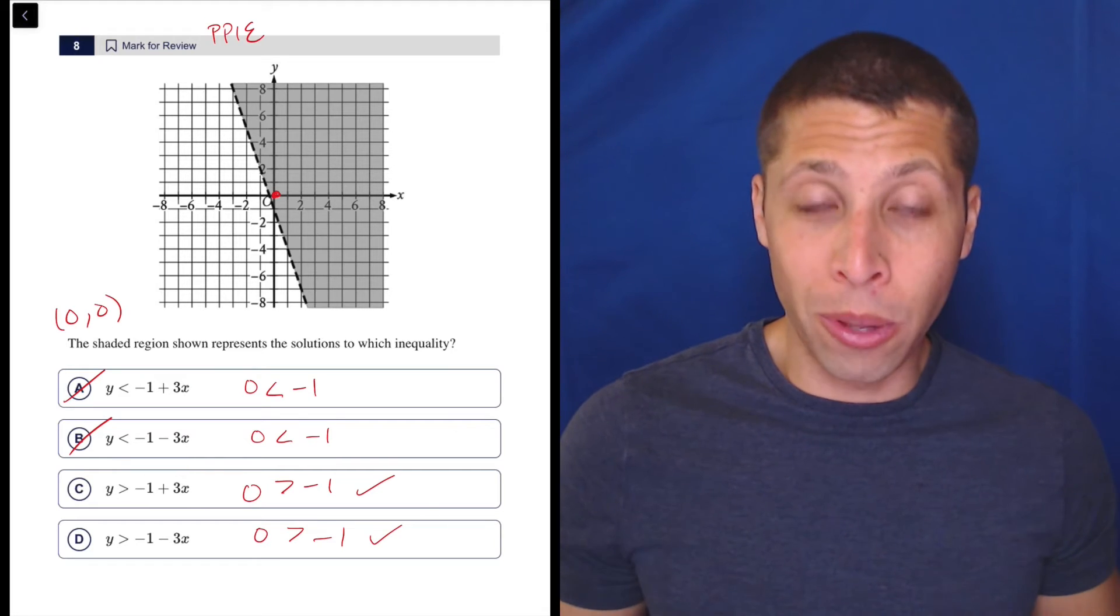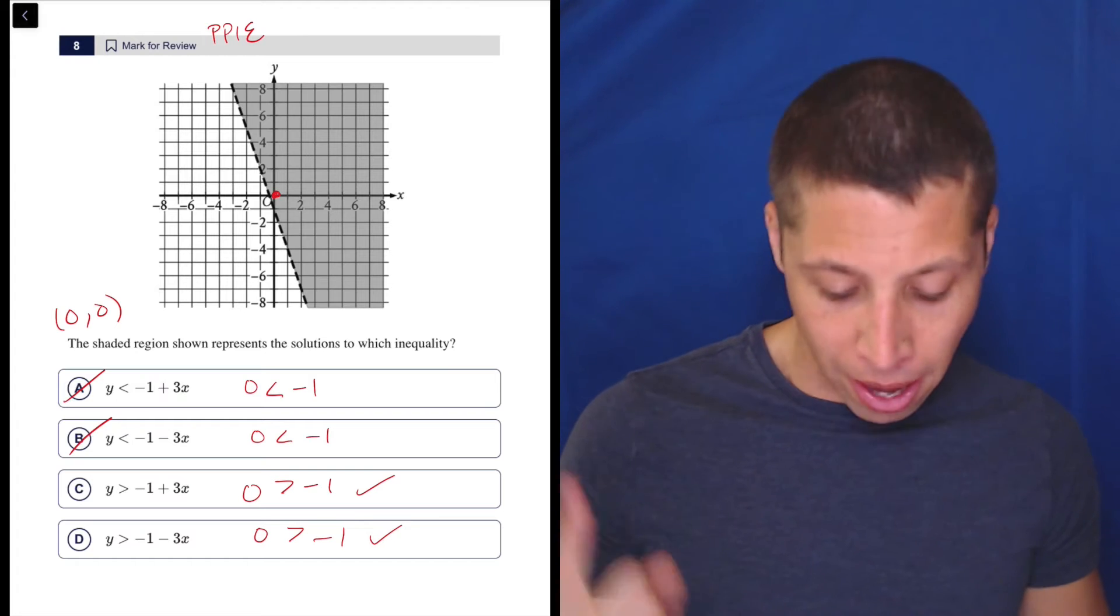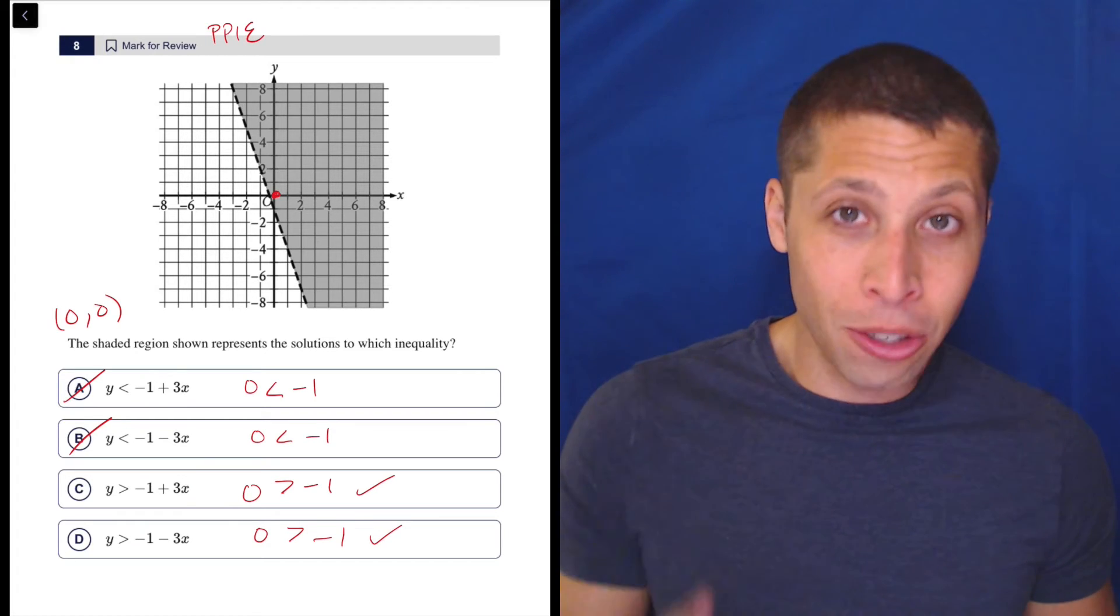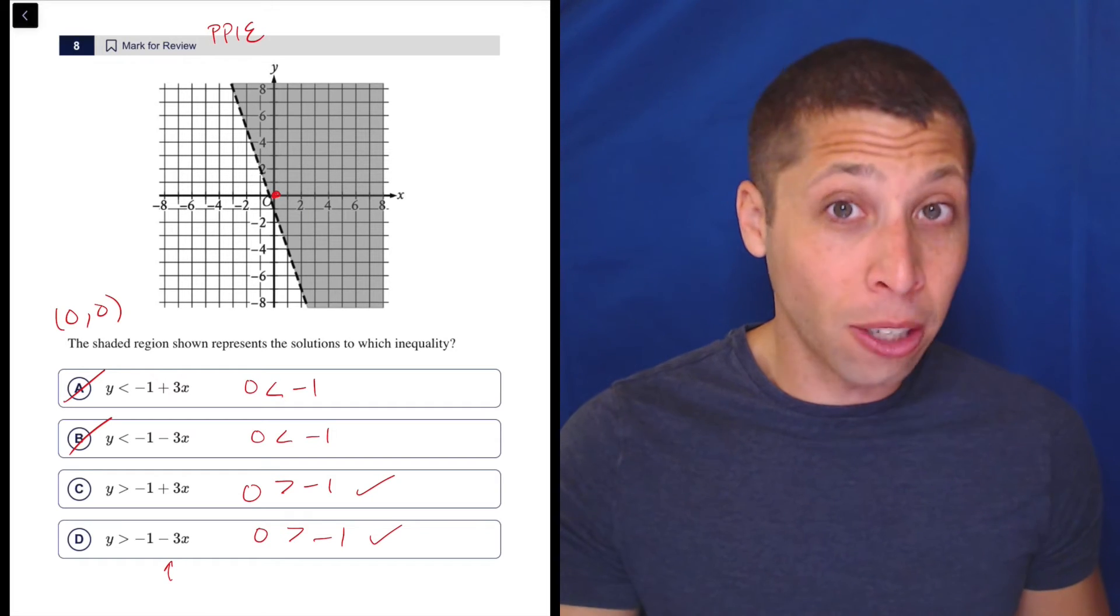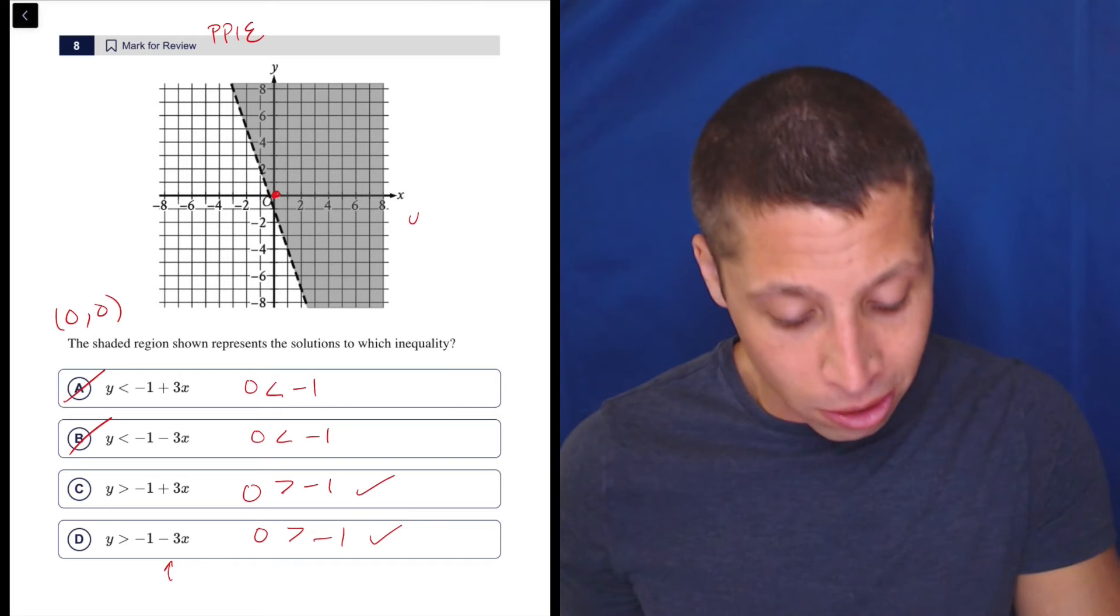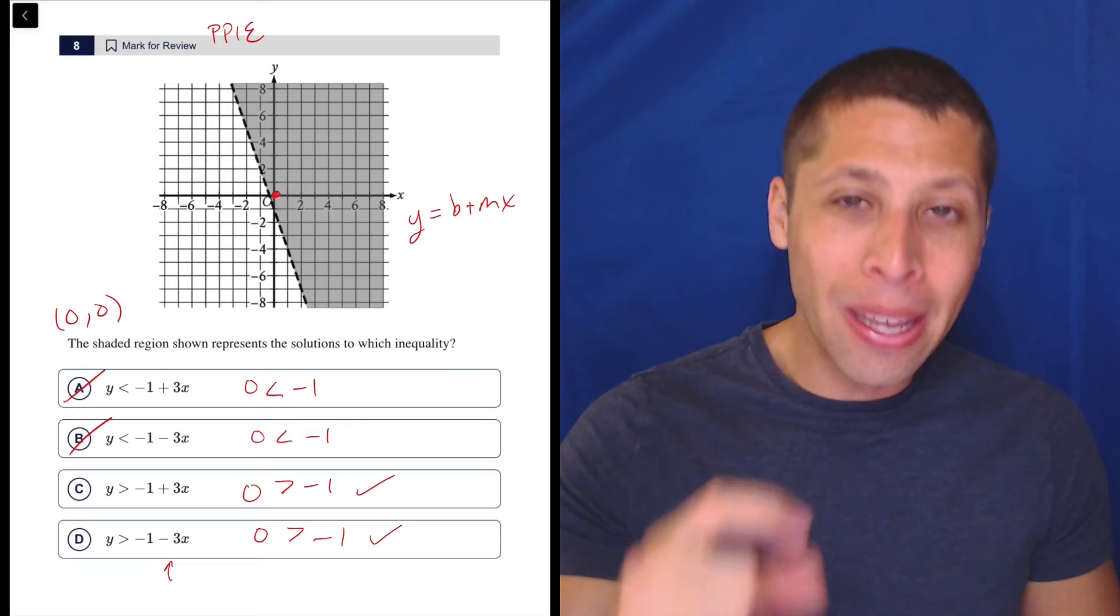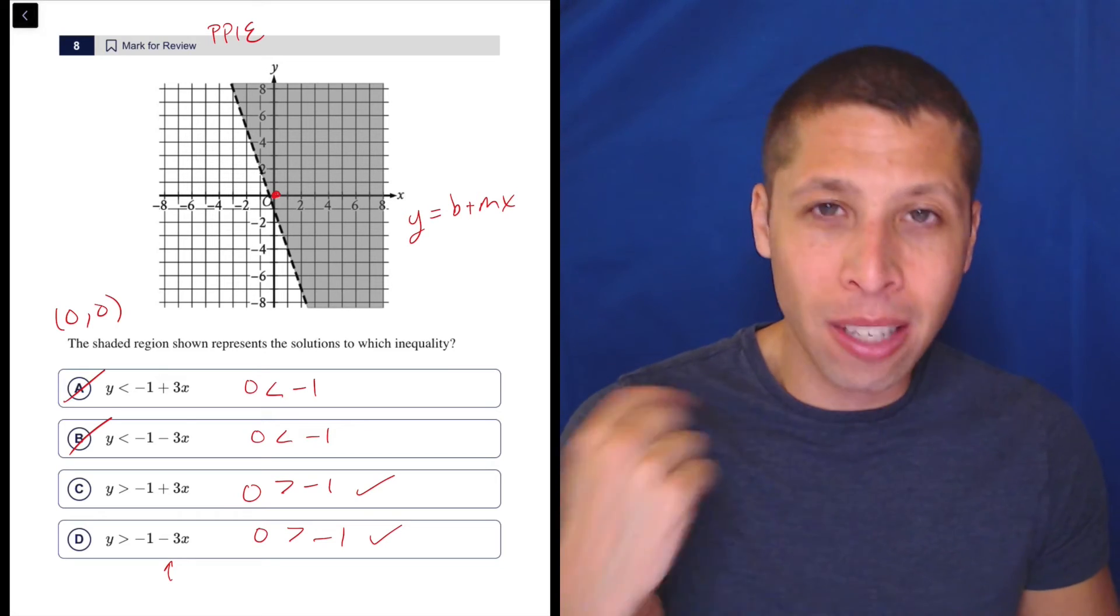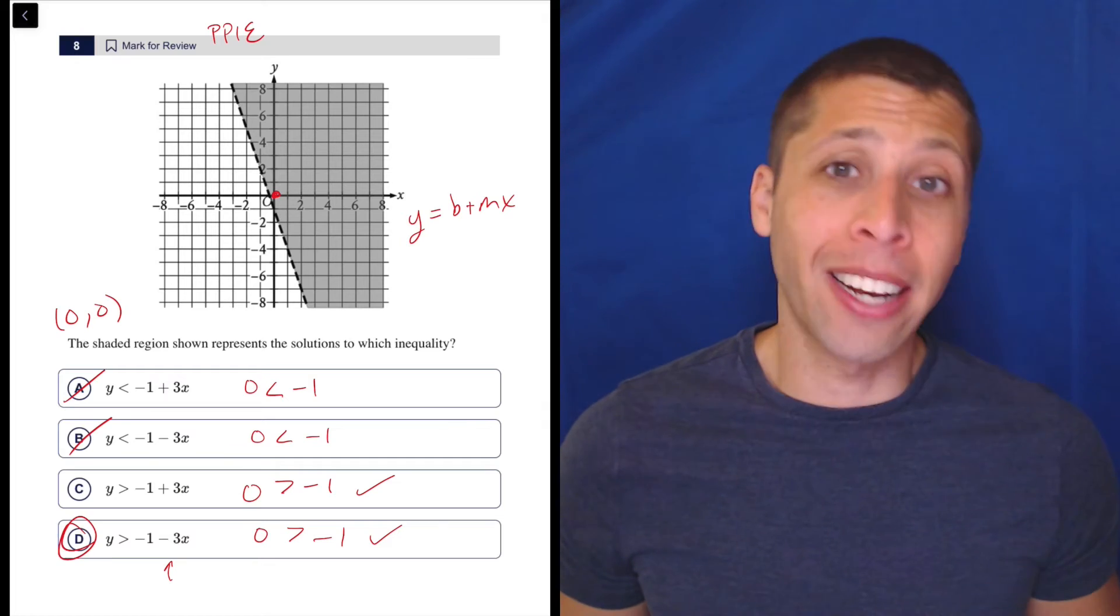Now, I might go to the Desmos calculator if I need to, but some of you are going to recognize, wait a minute. The only difference between these two things is that this has a negative slope. This kind of looks like Y equals MX plus B. It's a little flipped - the B is first, this is Y equals B plus MX, but the M is still the thing attached to the X, and that's going to represent the slope of the line. This is a negative slope. So just like that, it's kind of got to be D.